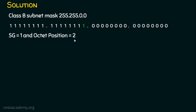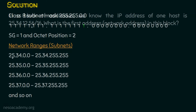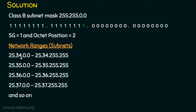Let's take the IP address given in the question because we need it to generate the subnet ranges. The IP address is 25.34.12.56. Now, 25.34.0.0 is the first address of the first subnet. Why? Because this is a class B subnet mask — the first two octets must be fixed — so we start from 0.0.